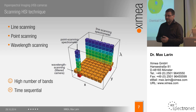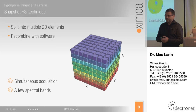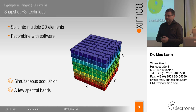Another technique is to split the hyperspectral data into multiple 2D elements by certain methods and then recombine the hyperspectral cube. The advantage is that this can be done in a single snapshot. The disadvantage is that we don't have as many spectral bands.